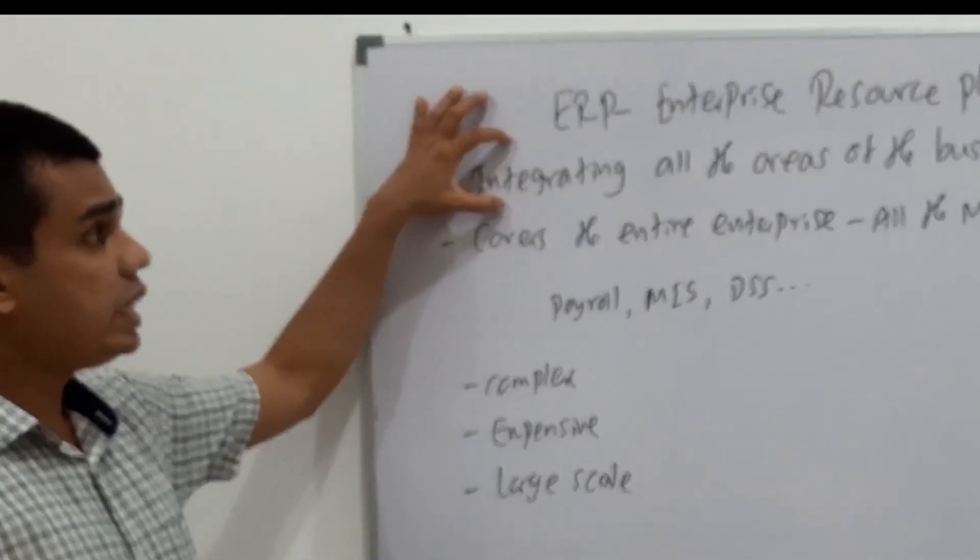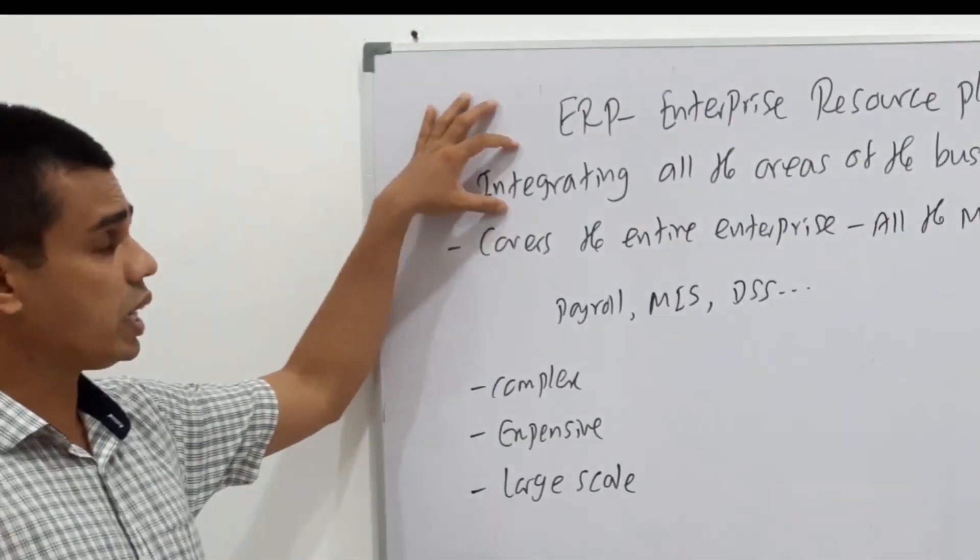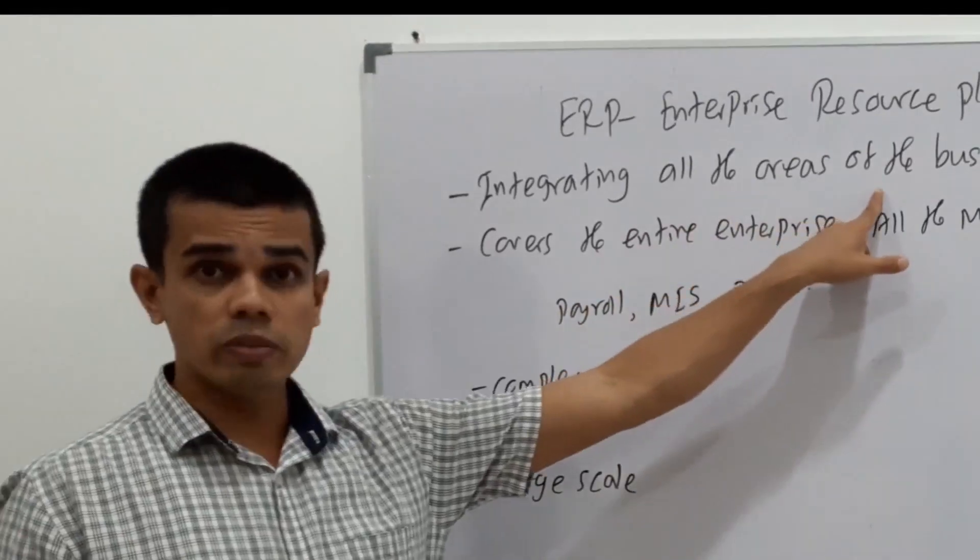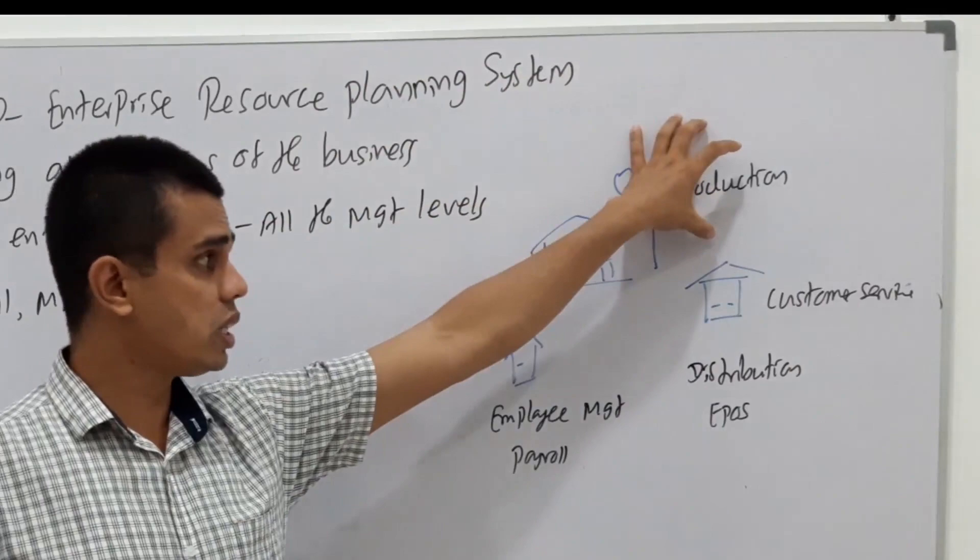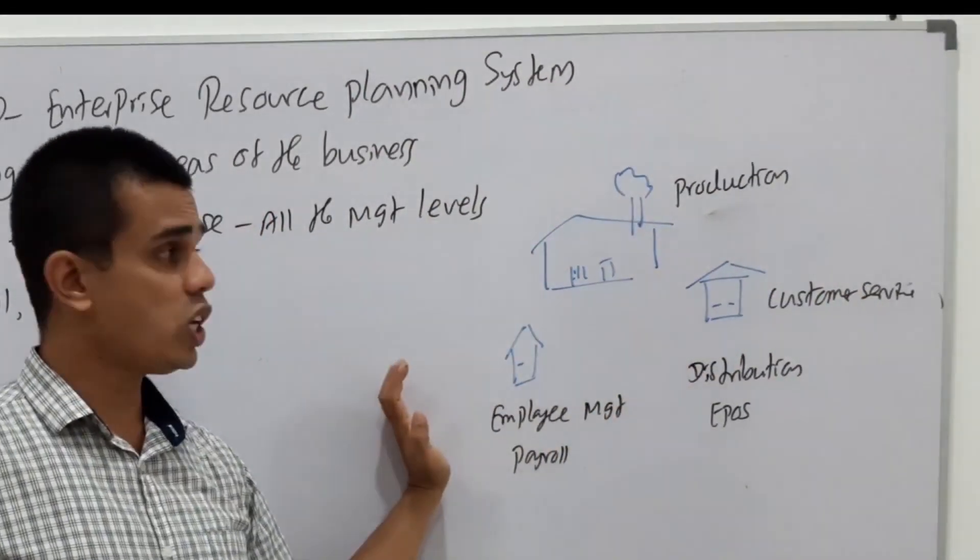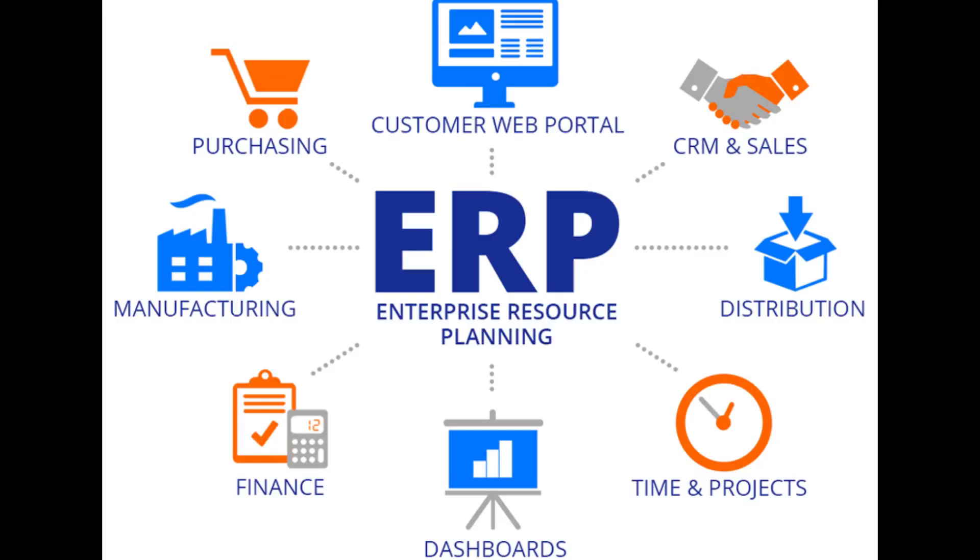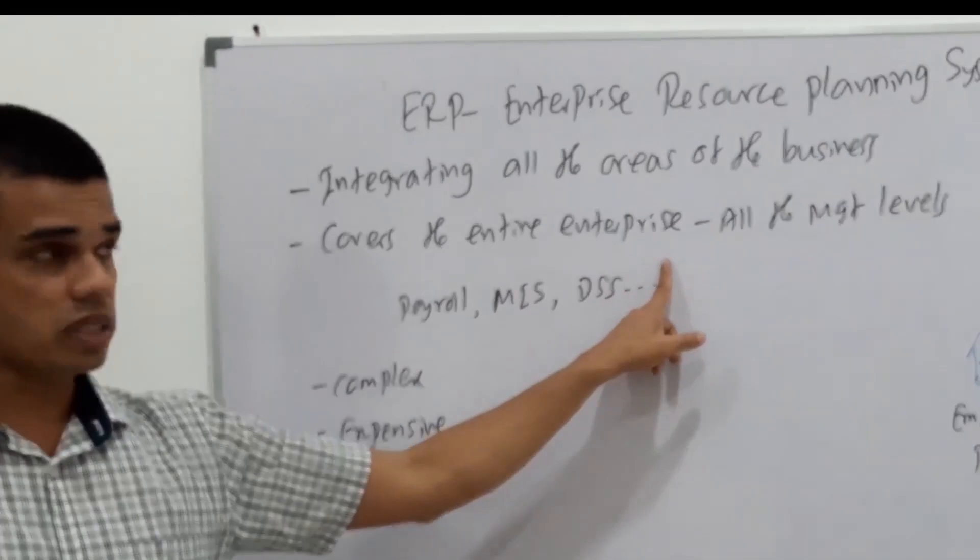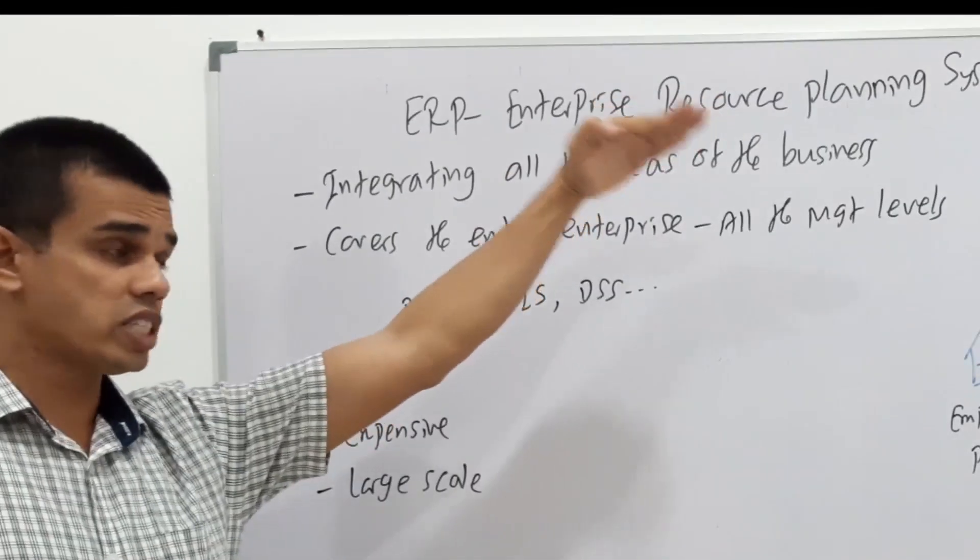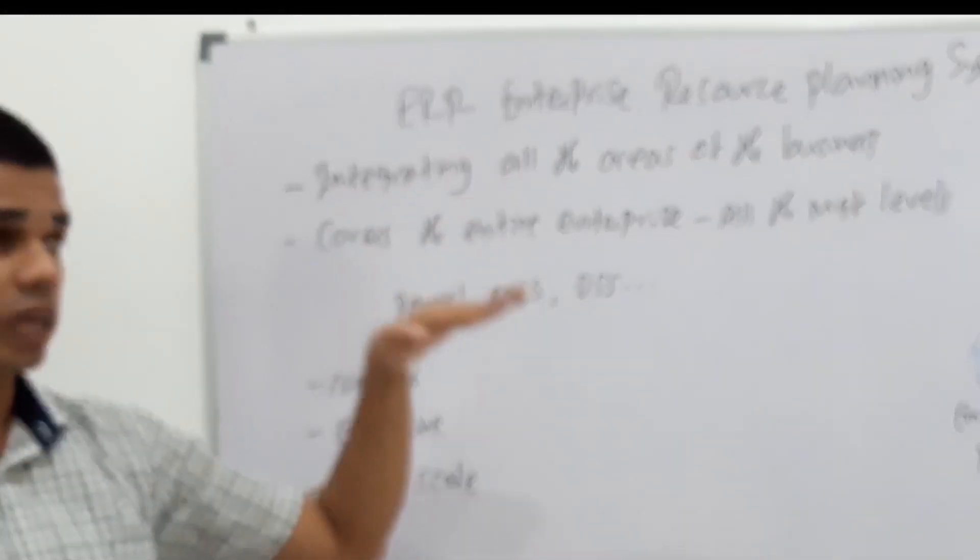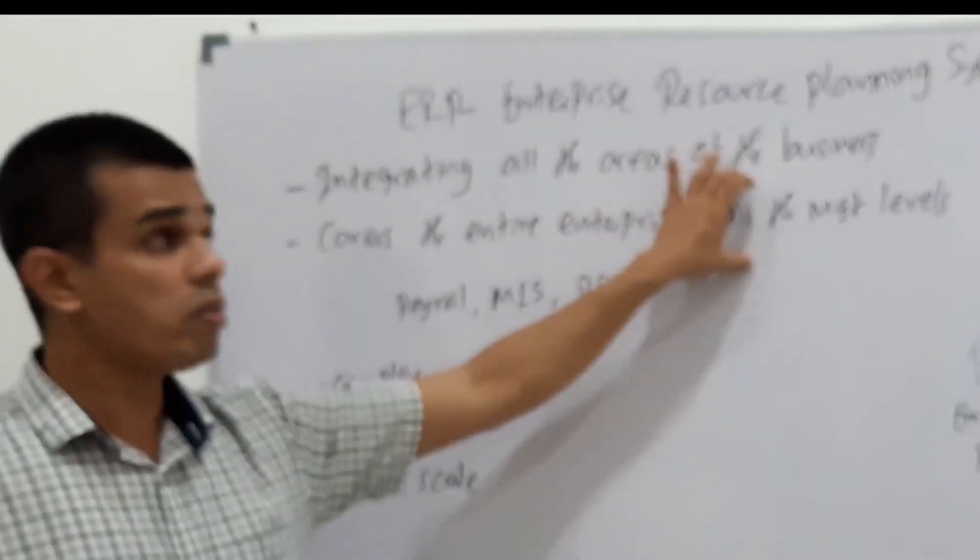Why is it expensive and complex? The reason is it is integrating, combining all the areas of the business. This is software to combine all areas. The production area, customer service, human resource management, delivery, calling raw materials. All the works of the organization are covered by ERP. It covers the entire enterprise, including all the management areas. The senior management, strategic management, middle management, operational managers - all of them are covered by ERP.